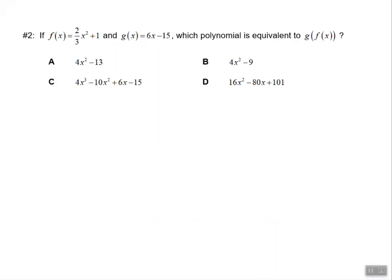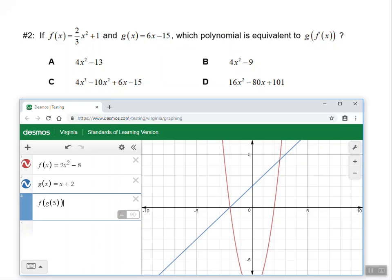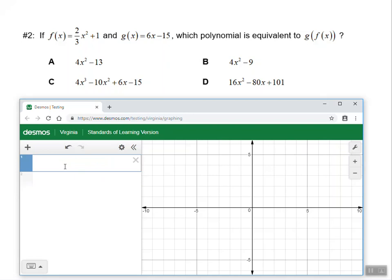Example number 2, here's a different f of x and here's a different g of x. This time we're looking for what is equivalent to g of f of x. So we're still going to have x's in our answer and clearly we have that in our answer choices here. So we're going to do the same thing. We're going to pull up our Desmos calculator. I'm going to clear out this f of x and this g of x, and I'll close that out too. And I'm going to type a new f of x. This time f of x is equal to 2 thirds x squared plus 1, and that's f of x.